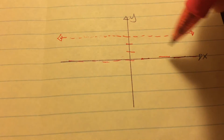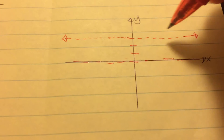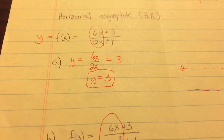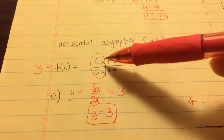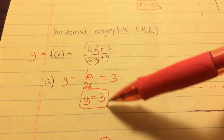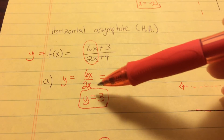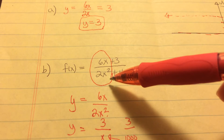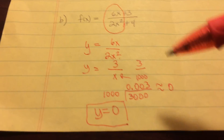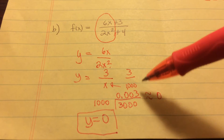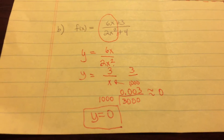To review: if the numerator and denominator have the same power, reduce them to get y equals some number — that's your horizontal asymptote. If the denominator power is larger than the numerator, reduce it and it will always come out to y equals 0 as the horizontal asymptote.